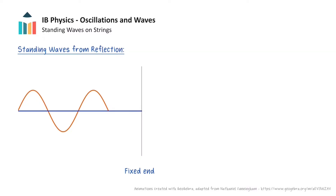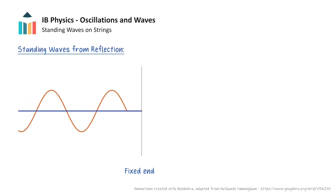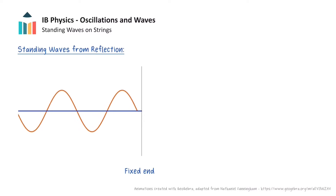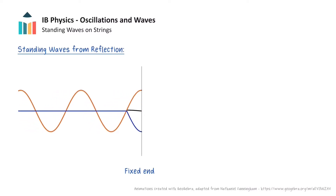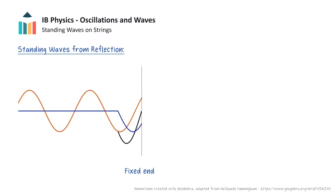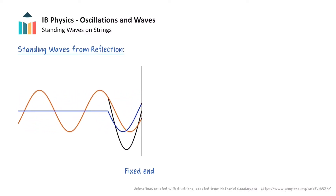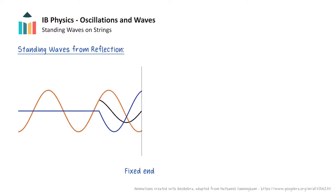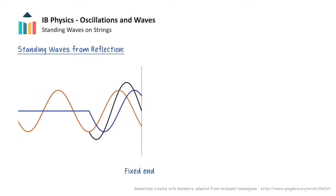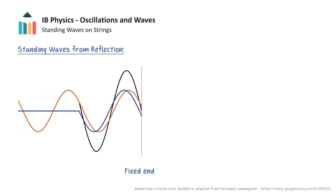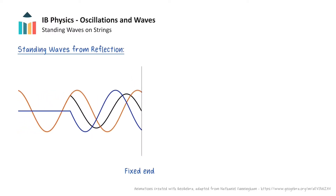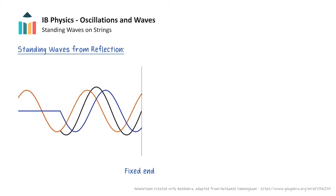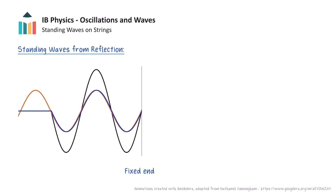Let's first consider this animation. Here, the orange wave moves towards the right and is incident at a fixed end of a boundary. This produces a blue reflected wave with a phase difference of 180 degrees, travelling in the opposite direction.